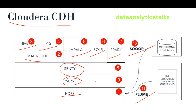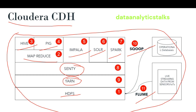CDH includes not just Hadoop itself but also a suite of related projects such as Apache Spark, Apache Hive, Apache HBase, and others — all integrated into a single platform. All these projects are integrated into a single platform and we call it Cloudera CDH.